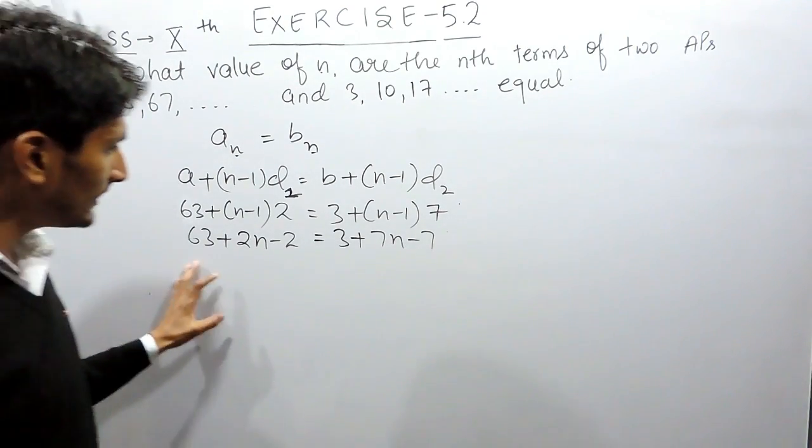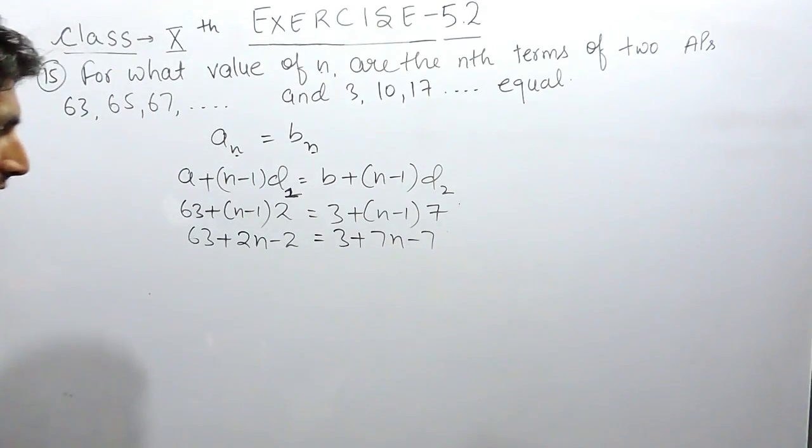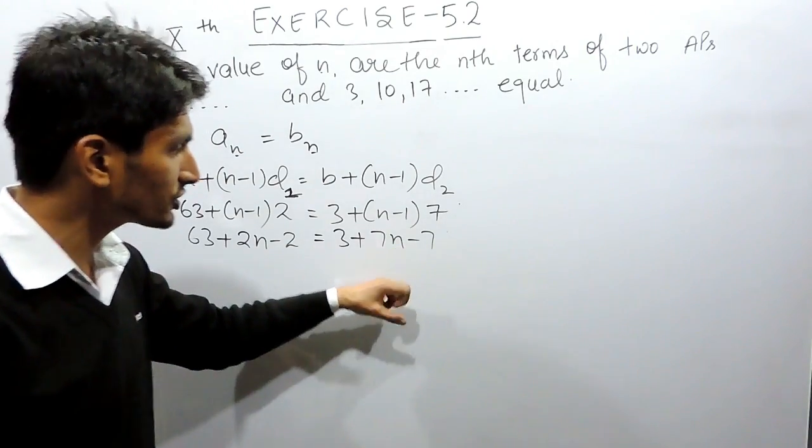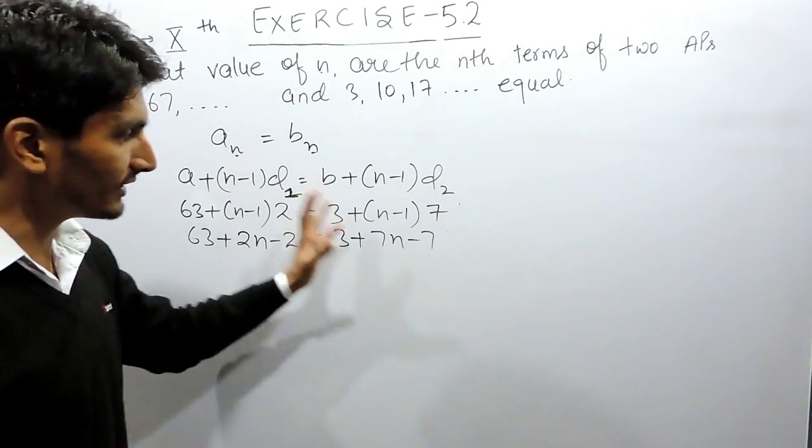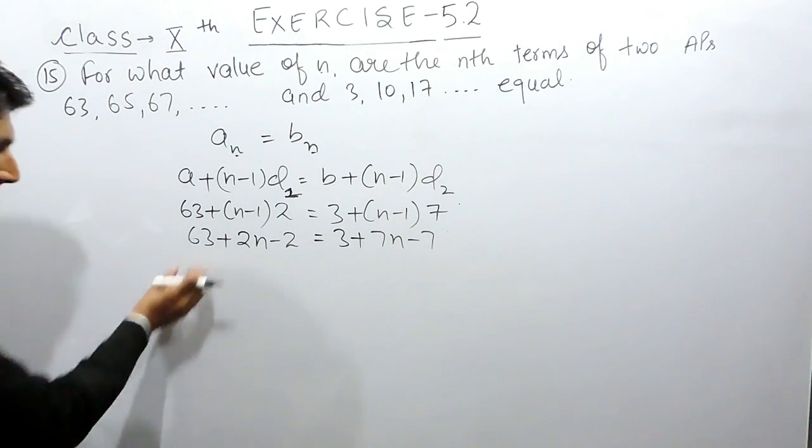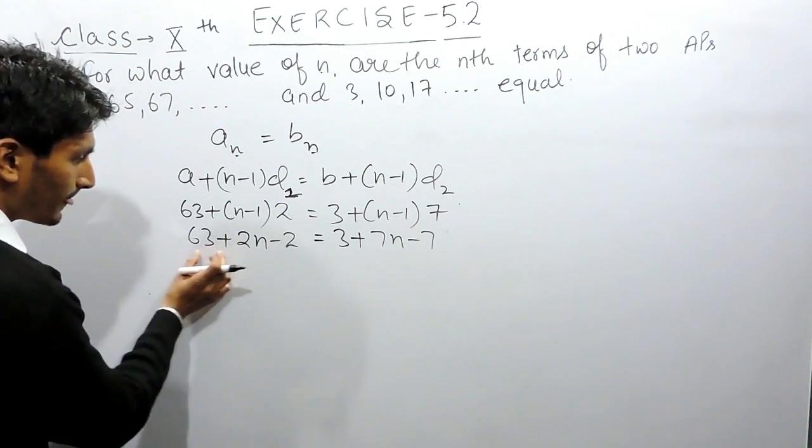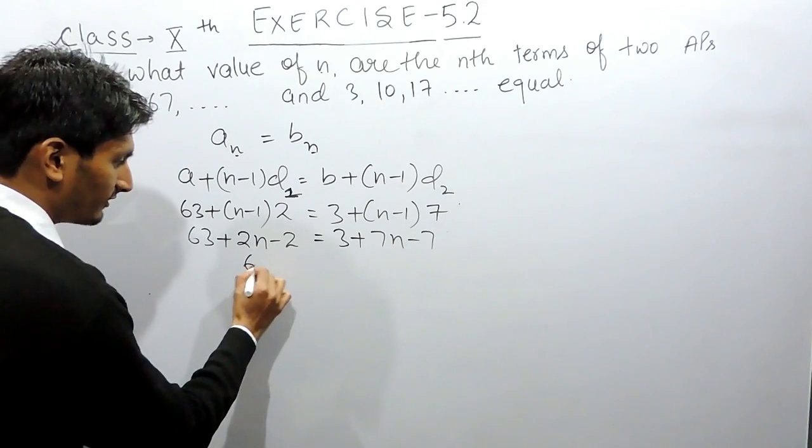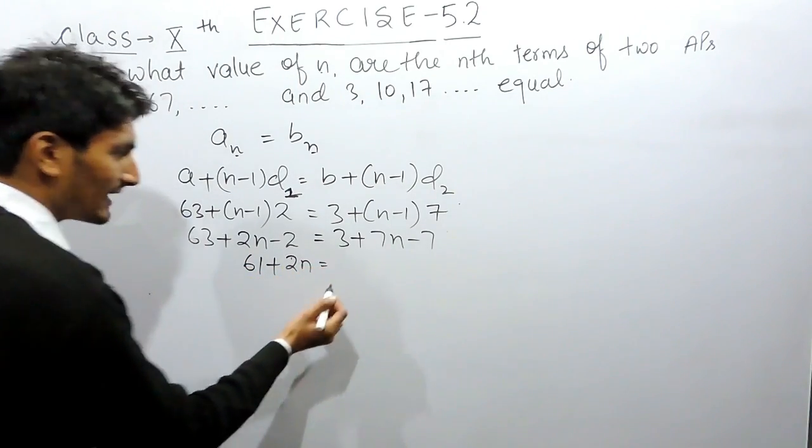To solve this kind of linear equation, I have to shift all the constants to one side and all the variables to one side. Before that I can solve these two constants further. 63 minus 2 will be 61 plus 2n.